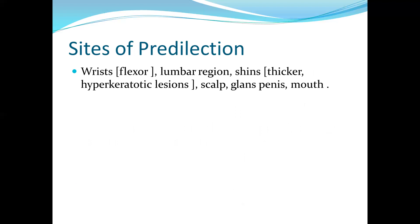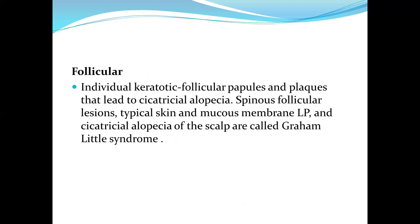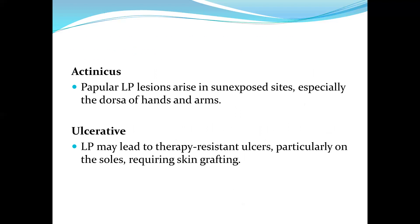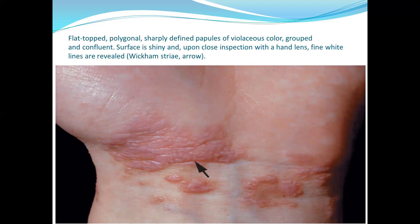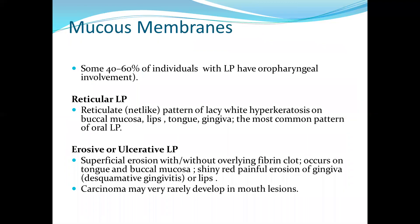Sites of predilection include the flexor aspect, lumbar region, shins, and thicker hyperkeratotic lesions on the scalp, glans penis, and the mouth. There are variants: hypertrophic, atrophic, follicular, vesicular, pigmentosus, actinicus, and ulcerative. In this diagram of lichen planus, the arrow points to Wickham's striae — the straight white lines. The flat-topped, polygonal, sharply defined papules of violaceous color are grouped and confluent, with a shiny surface.